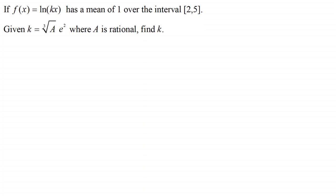Hi. Now I'm assuming that you've seen an earlier video on the mean of a function and what I've got here is a follow-up example that you might like to try. We've got here that if f of x equals the natural log of kx and it has a mean of 1 over this interval from 2 to 5. Given that k is equal to the cube root of a times e squared where a is rational, we've got to find k.